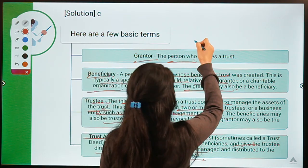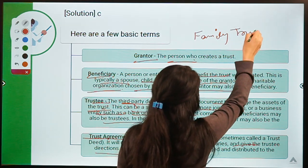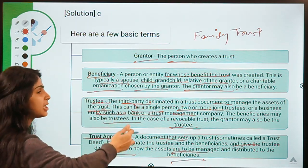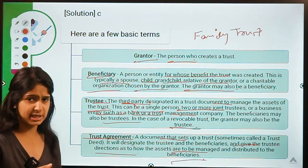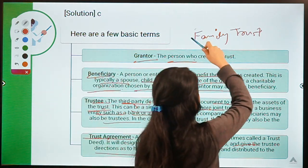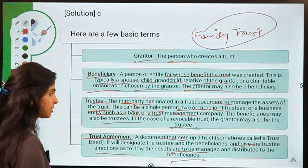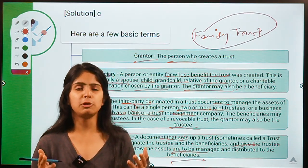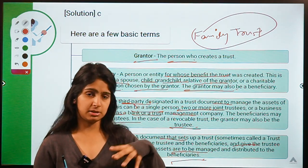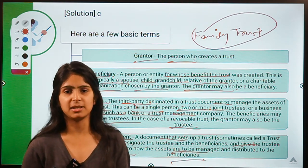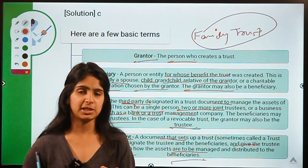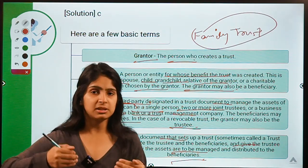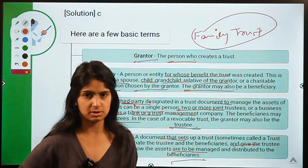Now coming to another term: family trust. When the beneficiary is somehow related to the grantor — a spouse, child, grandchild, or basically any relative — in that case, the trust is known as a family trust. This structure is commonly used in educational institutions where owners transfer management to parties known as trustees. You may have also seen in Bollywood movies how someone imparts a trustee with responsibility and then the trustee ends up having all the control over assets and not managing them properly.